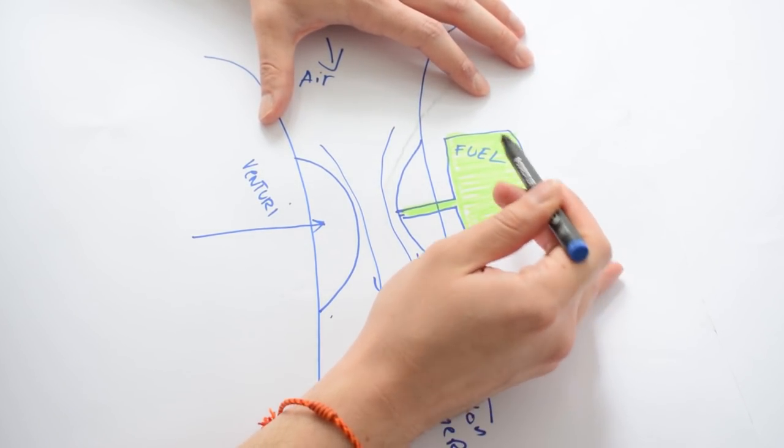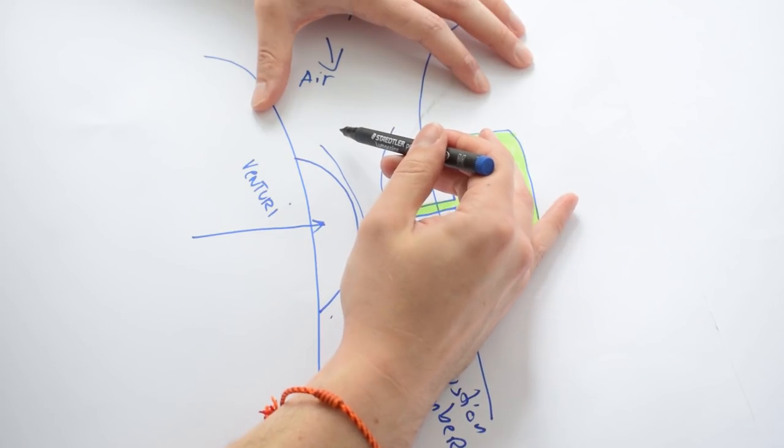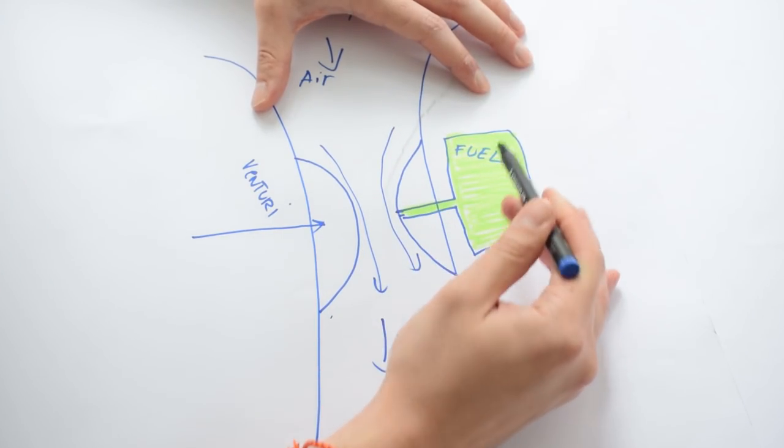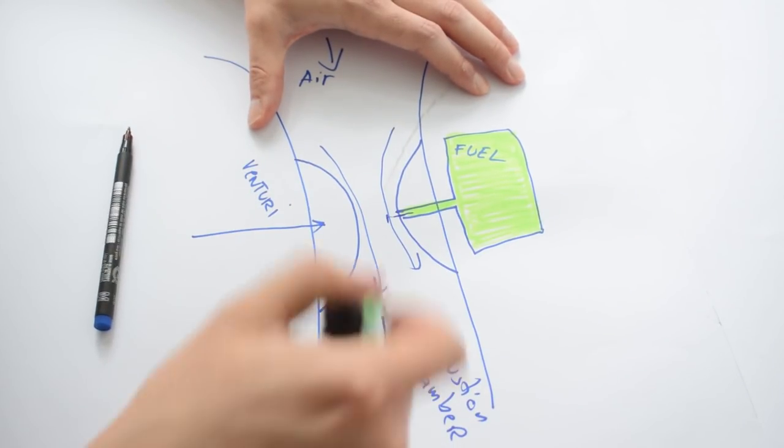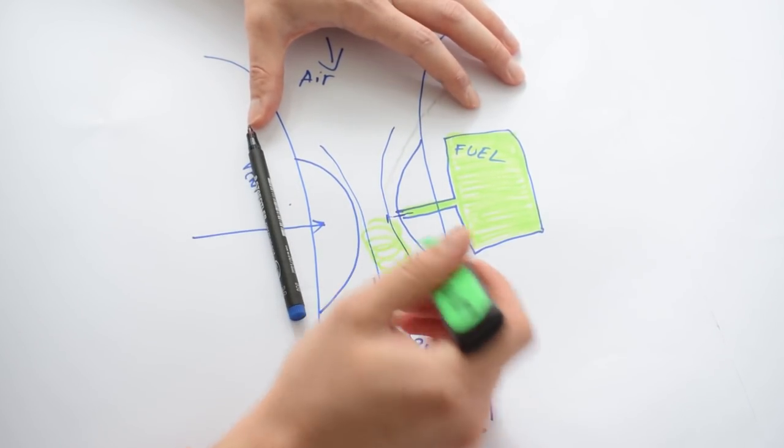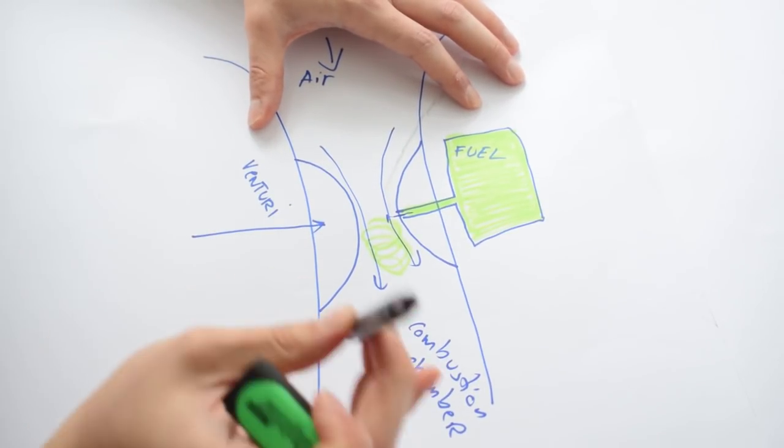So the fluids will rush from a high pressure area to a low pressure area, and thus as the low pressure air moves through here it's going to pick up the fuel from this reservoir and combine it with itself and then go into the combustion chamber where it's going to be ignited.